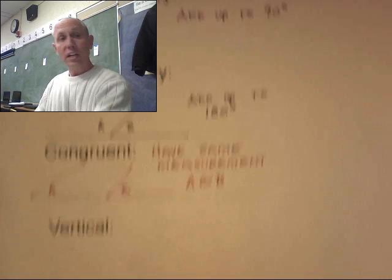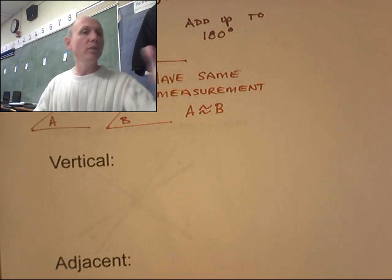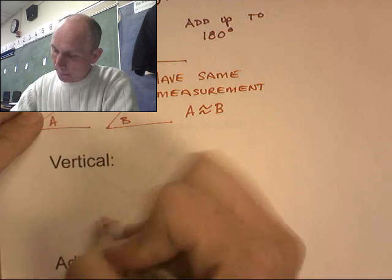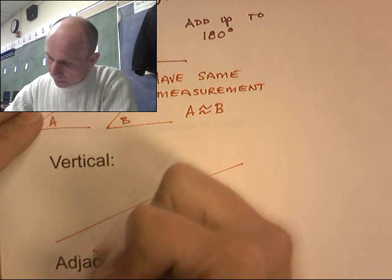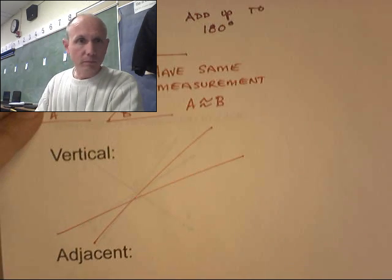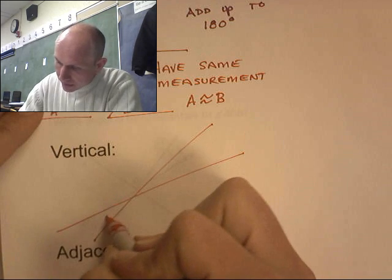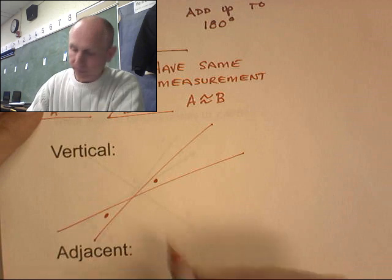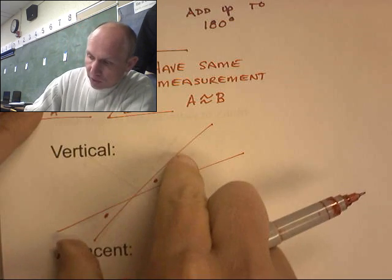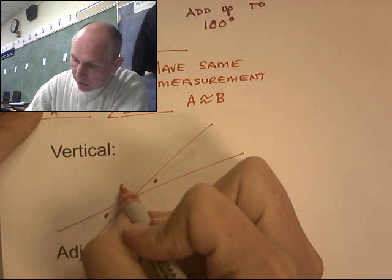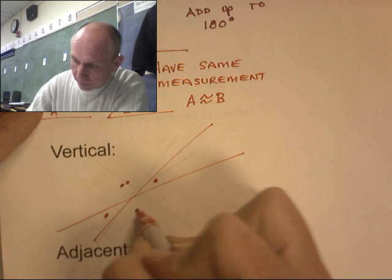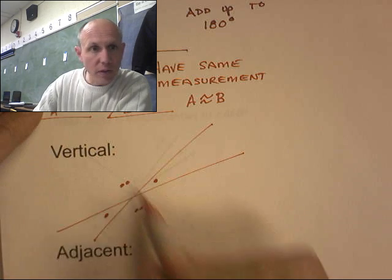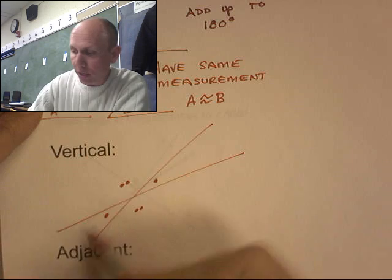Vertical angles are cool. They're actually congruent angles, but make two lines. Draw two lines. This angle and that angle, those are considered vertical angles. They're the angles that are across from each other. And these angles right here are considered vertical angles.